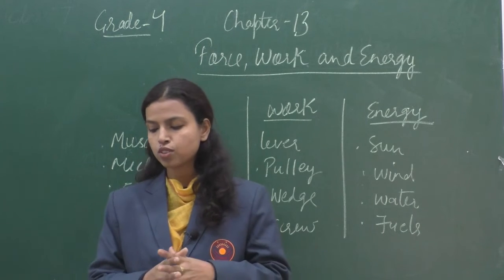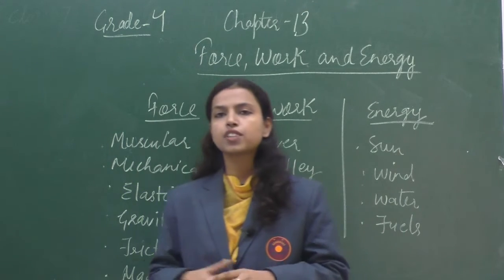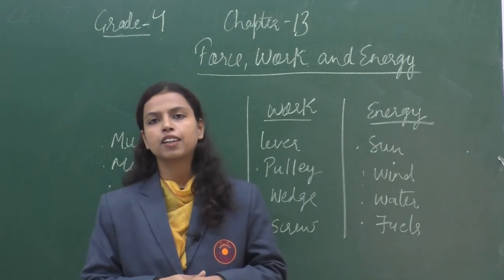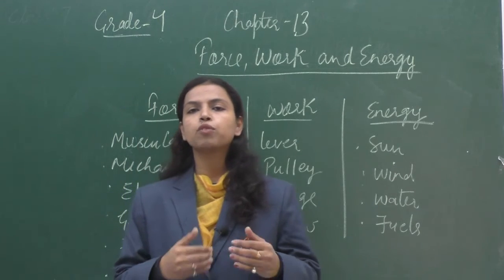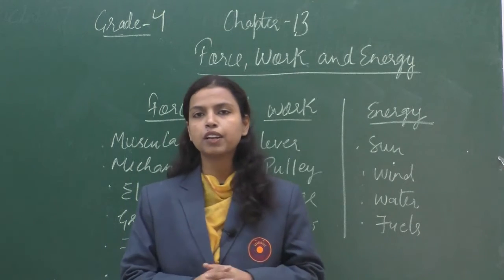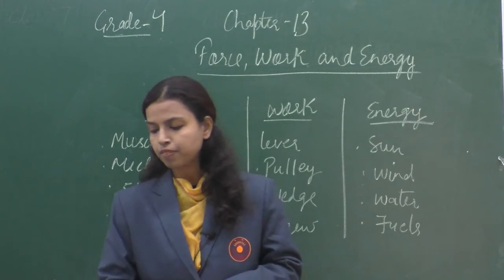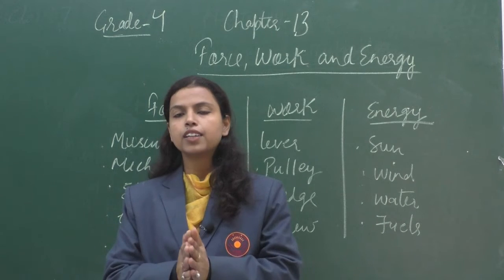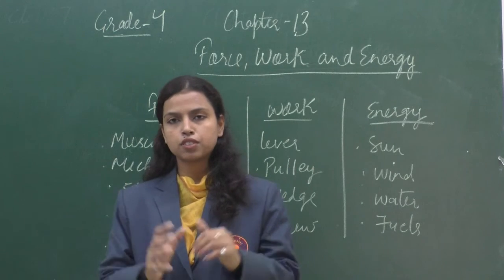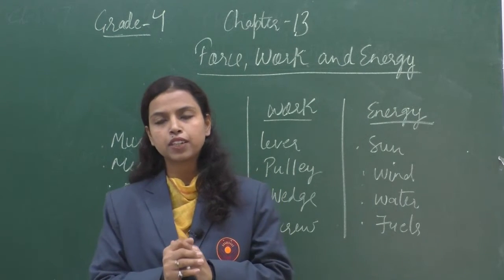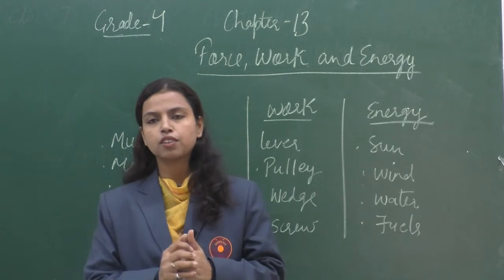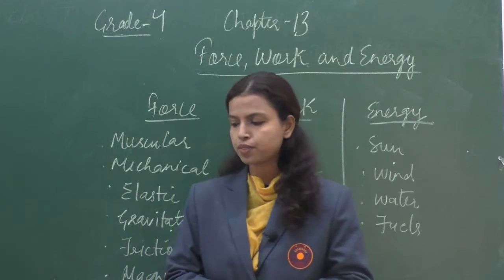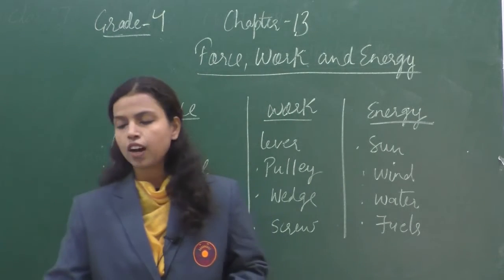We have frictional force. Moving things slow down because of some force, and that is called frictional force. For example, a bicycle slows down when we stop pedaling. Then we have magnetic force, which attracts certain metals like iron towards it.